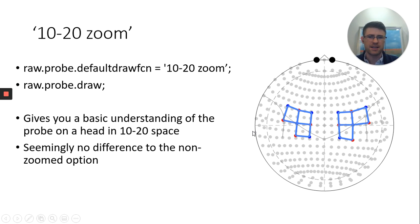You can also use 10-20 zoom, which I assume is supposed to zoom in on the probe, but I actually didn't see any difference between the two. So it doesn't seem to be too functional so far. Of course, it's probably a little simple swap in the code. So if this comes to light and it's useful, it might be easy to fix.